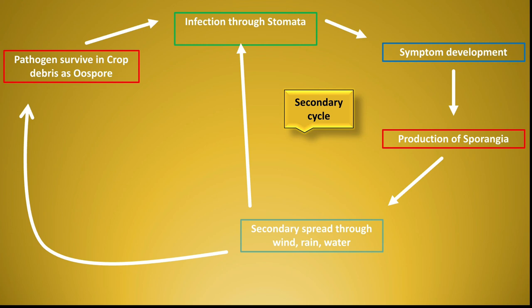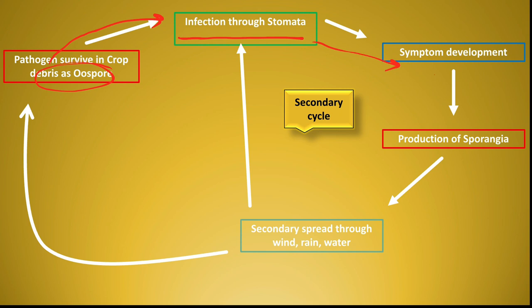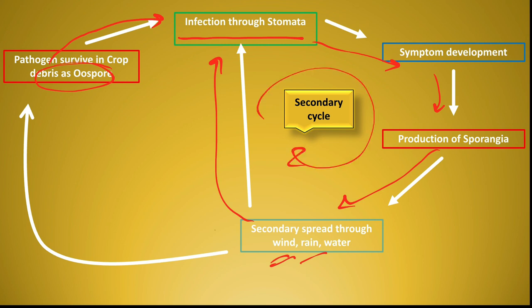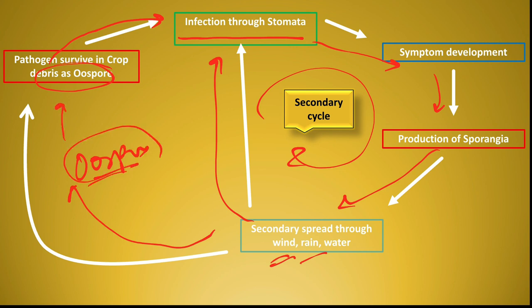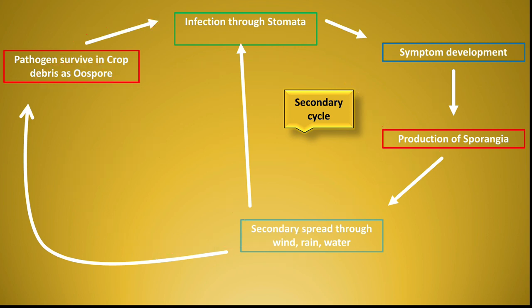Disease Cycle: Pathogen, crop debris में oospores के form में survive करता है। Oospores germinate होकर sporangia बनाते हैं, फिर sporangia से zoospores release होते हैं और leaf के lower surface में infection करते हैं। Infection के बाद growth और multiplication होती है, symptom दिखाई देता है। फिर pathogen sporangiophore बनाता है जो पत्ती की निचली side के stomata से बाहर निकलते हैं और rain water, winds या water के through दूसरे plants में जाकर infection करते हैं — इसी को secondary infection cycle कहते हैं। Pathogen इस प्रकार लंबे समय तक survive करता रहता है।